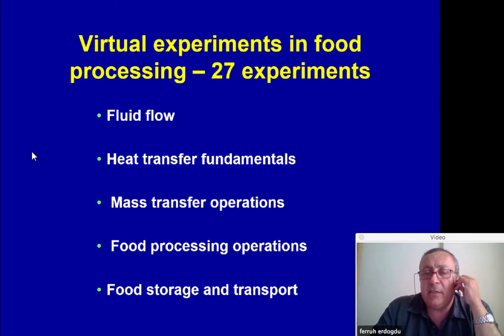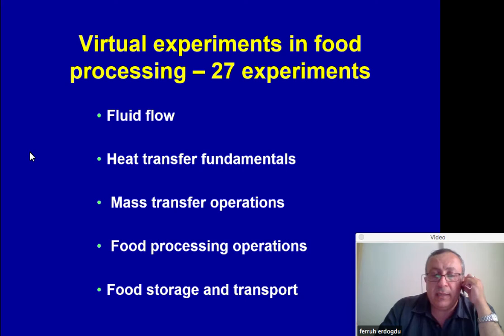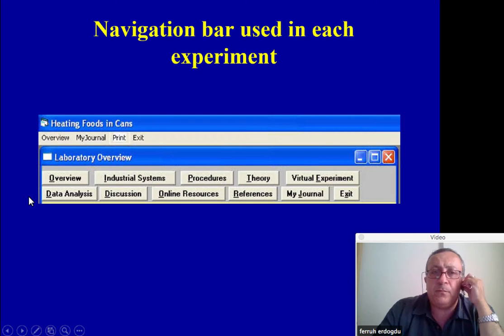We developed 27 experiments covering fluid flow, heat transfer fundamentals, mass transfer operations, food processing operations, and food storage and transport. In every experiment, we followed a consistent structure so students would be familiar with the format. We had a navigation bar used in each experiment, which included different modules and sub-modules. This meant that once you learned one experiment, it was easy to follow all the rest.